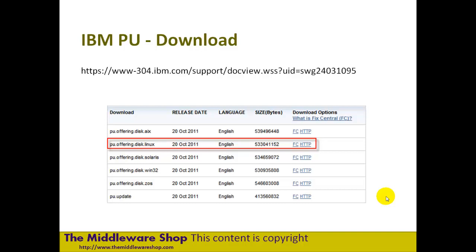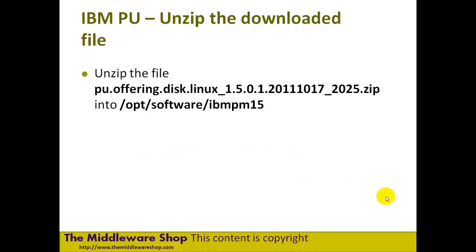Here's a URL if you can't find where to find the Packaging Utility. It's a not really well-known product, so it was a bit hard to find the first time, but it's very useful. It's a zip file — extract it where you want. In this case, I've used /opt/software/IBM/PM15, which was its default name and default location.